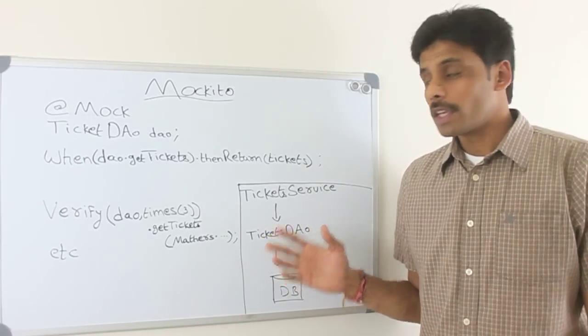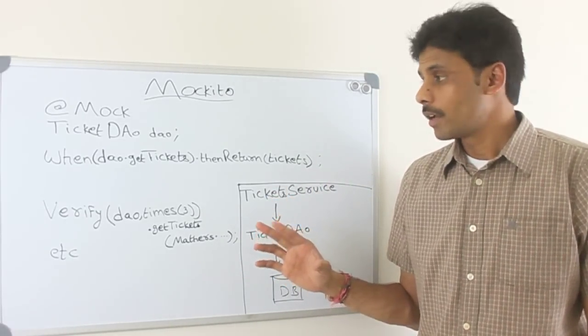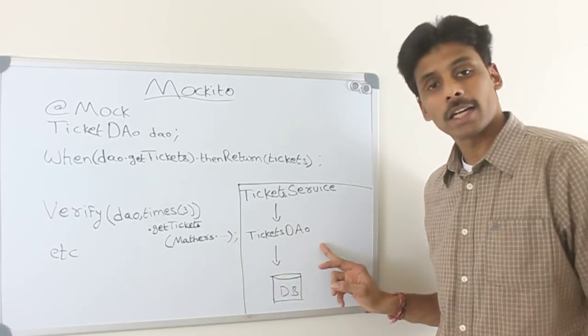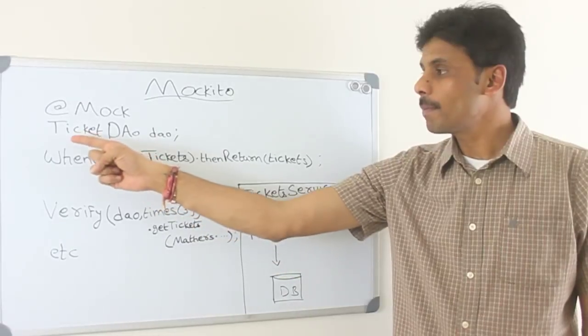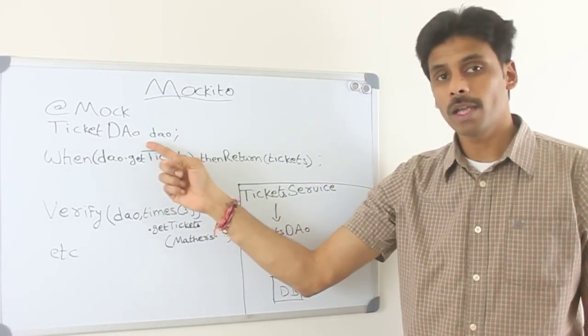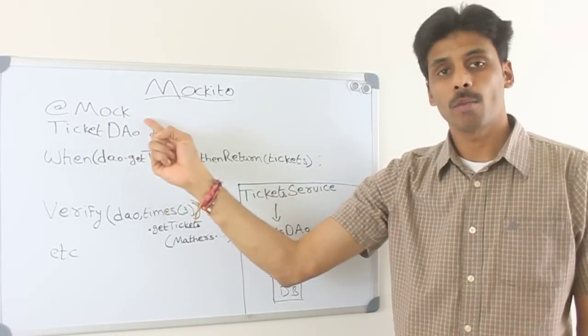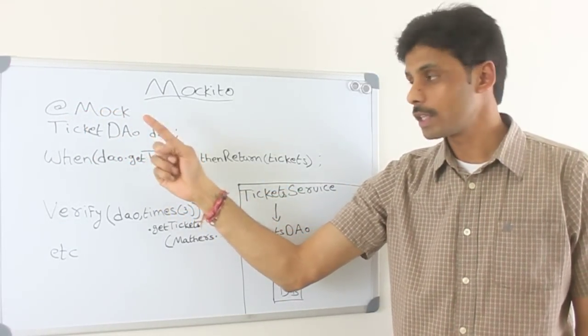To start mocking, in your unit tests class, since I want to mock my tickets DAO here, I will simply mark the ticket DAO in my unit test using the @Mock annotation from Mockito. Once I do that, I can now mock all the method calls on this DAO.